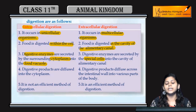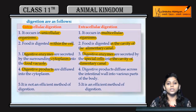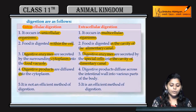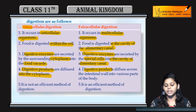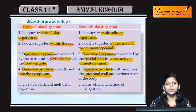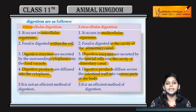In extracellular digestion, digestive enzymes are secreted by special cells into the cavity of the alimentary canal, where digestion occurs. In intracellular digestion, the digestive products are released into the cytoplasm itself. In extracellular digestion, the digestive products diffuse across the intestinal wall and are supplied to various parts of the body, so that different cells and body parts can obtain nutrition and energy.